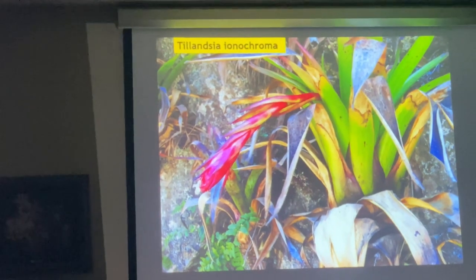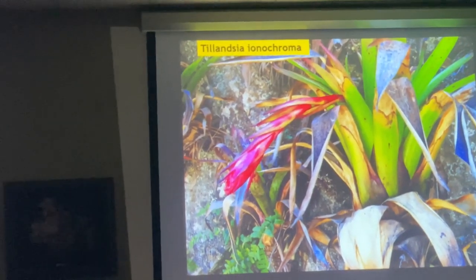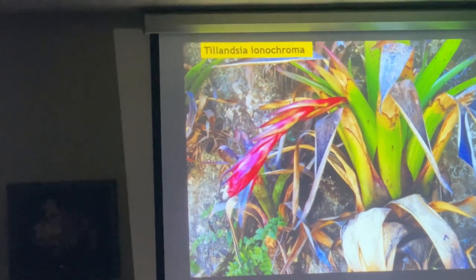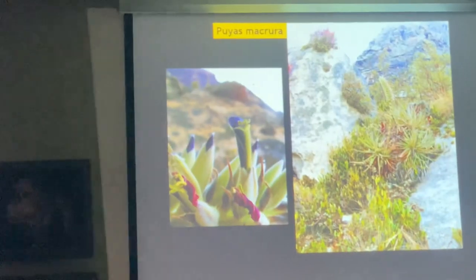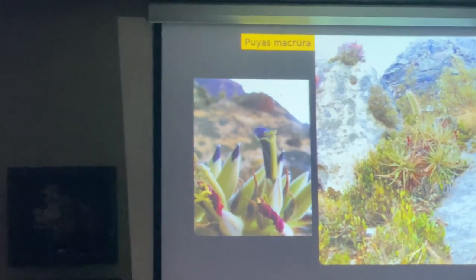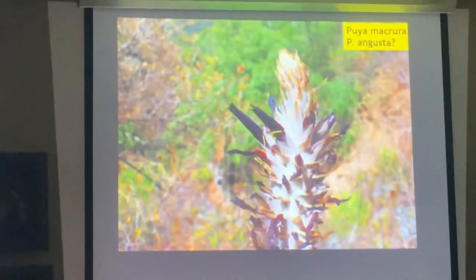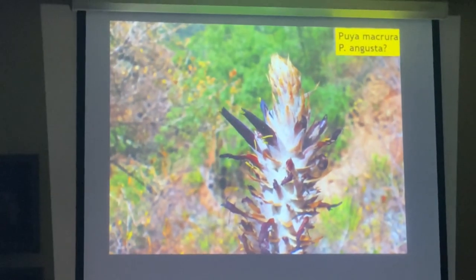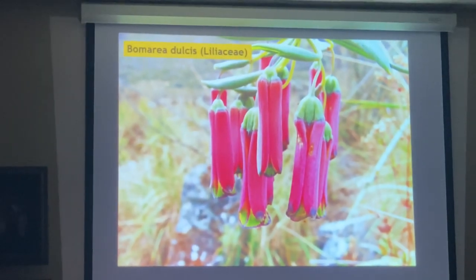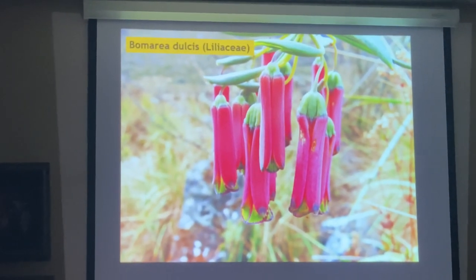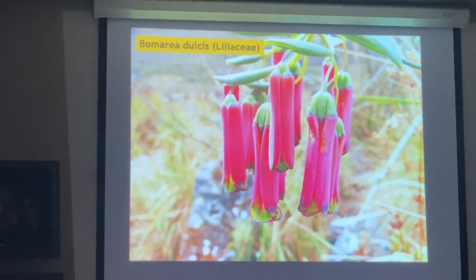Another Tillandsia grows next to the lake on the rocks, but very low by the lake — not covering the rocks and not a water plant. Tillandsia ionochroma with a pendant inflorescence. Another Puya — Puya macrura. And some very nice Bomarea dulcis, which grows above 11,000 feet in elevation.